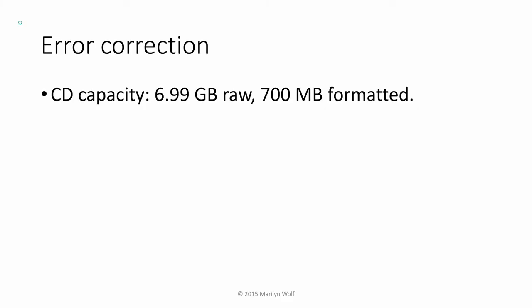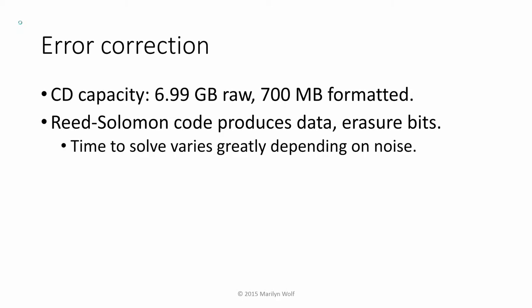A pre-recorded disc like this one is manufactured by pressing the pits into the surface of the disc. This is prone to errors, and we can introduce more errors when we handle the disc. We take care of these errors using error correction codes. A compact disc actually contains 6.99 gigabytes, but only 700 megabytes of that are usable formatted data. The rest is used for error correction. A Reed-Solomon code is used to produce data and erasure bits. This very powerful code allows the correction of a variety of errors that are common in compact discs.